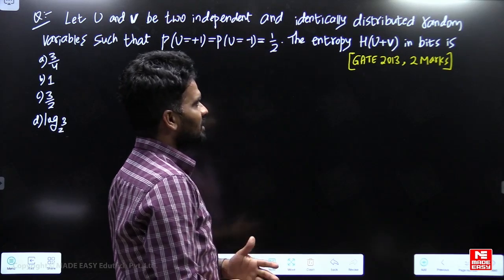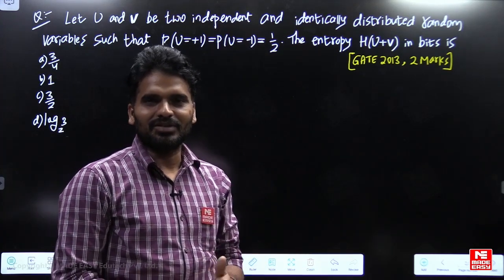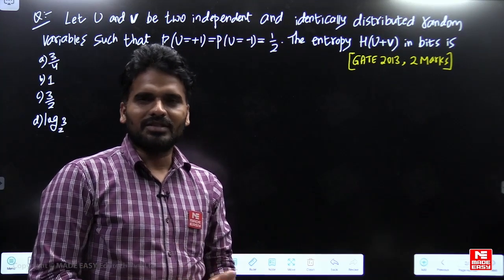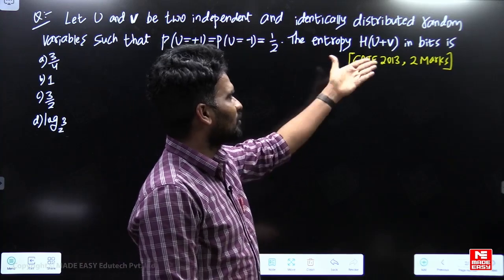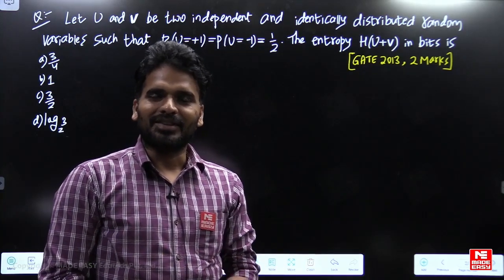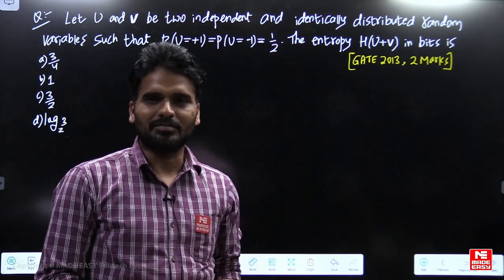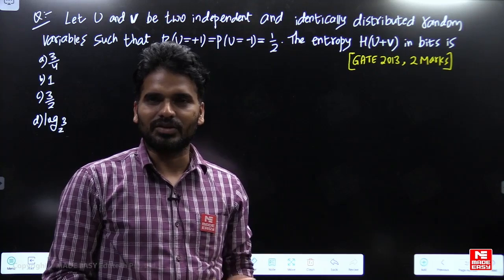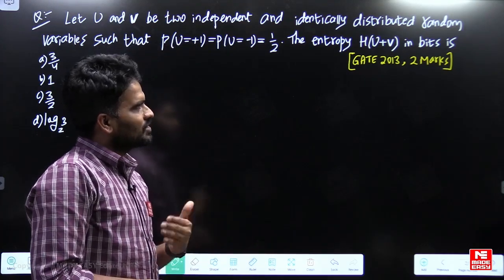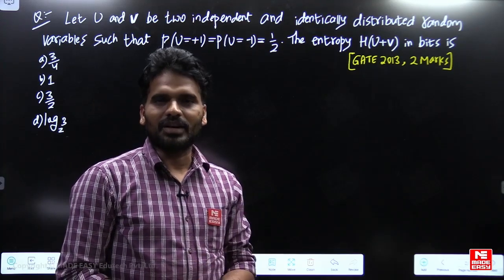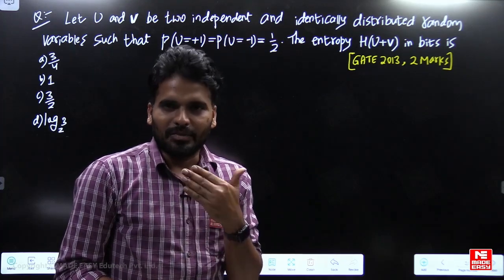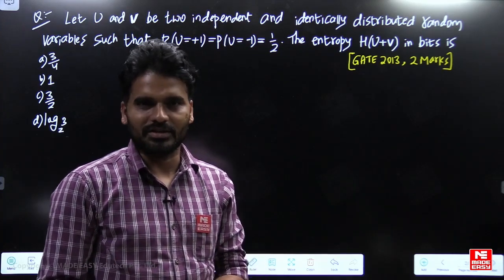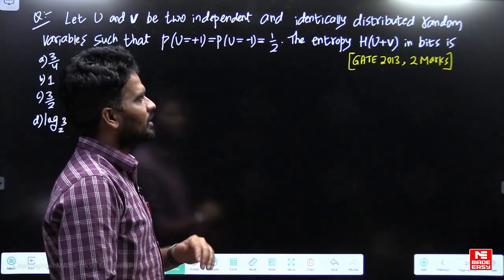The units of entropy we generally take as bits per symbol. But whenever the question asks to find the entropy of a random variable, they mention the units as bits only. It makes no difference — whether they mention bits or bits per symbol, both are the same entropy. So here we have to find the entropy of the random variable u+v.